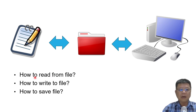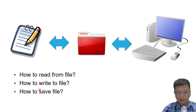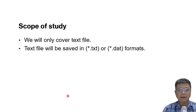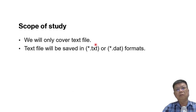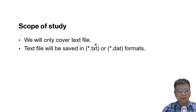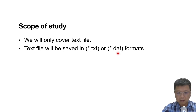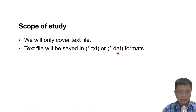We are going to learn about how to read from a file, how to write to a file, and how to save a file. The scope of this study covers text files only. We may have binary files, we may write or read from image files, but that is not covered in this video. In this video we will cover .txt and .dat formats only, where we can save data or information into the text file.